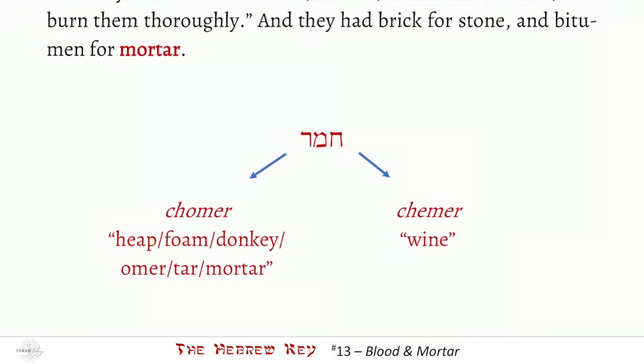Let's summarize. This word, when pronounced homer, can mean heap, foam or a wave of water, a donkey, an omer basket that holds a heap of grain, tar, or mortar. Now here's the interesting thing where it suddenly takes a curve. If you pronounce this word chemer, it means wine. What in the world does this word have to do with wine? It could be that it takes a heap of grapes to make a sizable amount of wine — but why would wine be called by the same word?